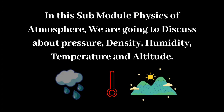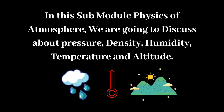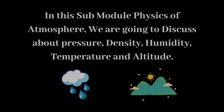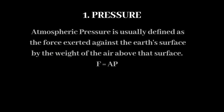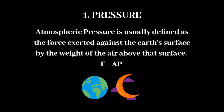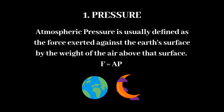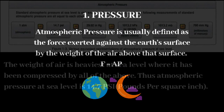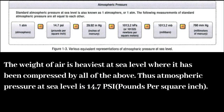In this sub-module, Physics of Atmosphere, we are going to discuss pressure, density, humidity, temperature, and altitude. First, let's get started with pressure. Atmospheric pressure is usually defined as the force exerted against the earth's surface by the weight of the air above that surface. F equals A times P — that means force F equals area A times pressure P. The weight of air is heaviest at sea level, where it has been compressed by all of the air above.